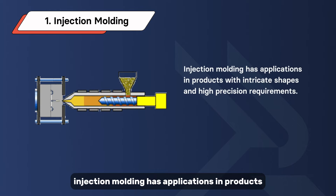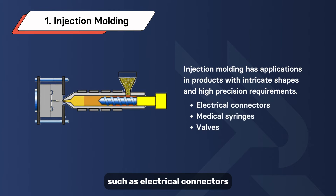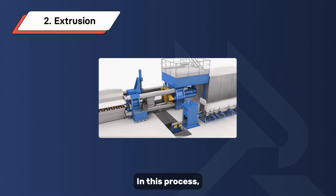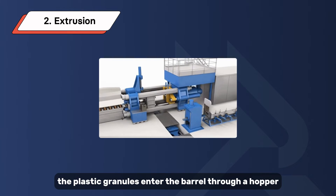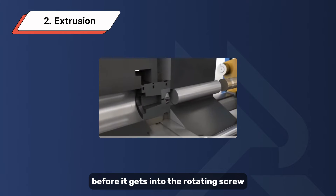Injection molding has applications in products with intricate shapes and high precision requirements, such as electrical connectors, medical syringes, and valves, among others. In the extrusion process, plastic granules enter the barrel through a hopper before getting into the rotating screw.